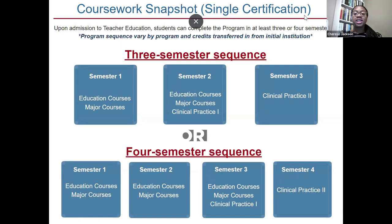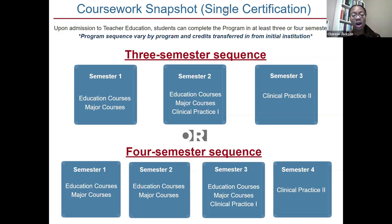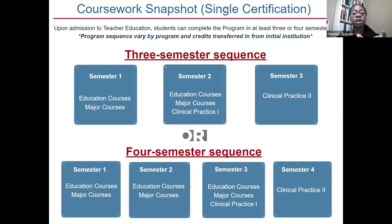This is our course snapshot for our single cert — our four-year program where you earn a bachelor's of arts and your teaching certification in one of the three we offer. Upon admission to the teacher education program, students can complete the program in at least three or four semesters. This sequence may vary if you're coming in with transfer credits, but if you're starting as a traditional first-time freshman, you can complete the single certification in three or four semesters.